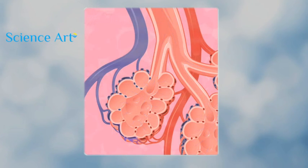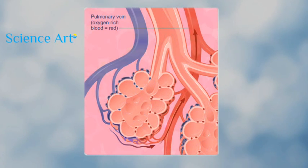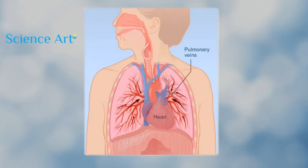Meanwhile, the oxygen rich blood flows back to the heart through the pulmonary veins. The heart then pumps the blood to the rest of the body.